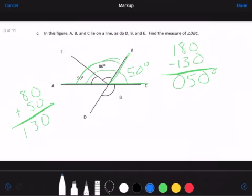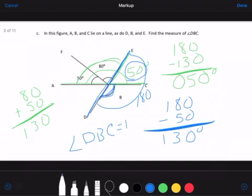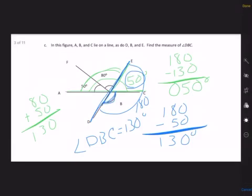But the question is actually asking for angle DBC. So now I want to notice that this is a straight line, meaning that from here to here is 180 degrees. So I'm going to go 180 minus this 50 would give me 130 degrees. So angle DBC equals 130 degrees. And that's number three, best of luck.